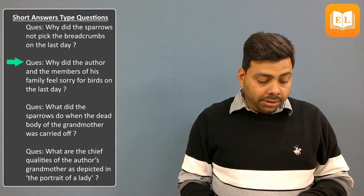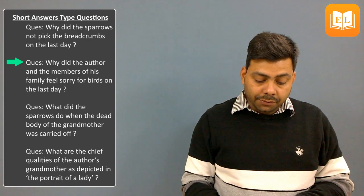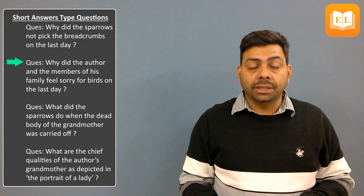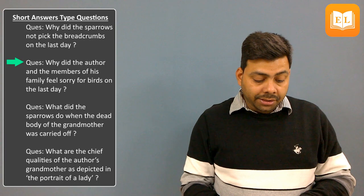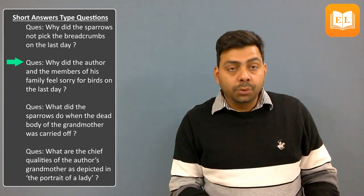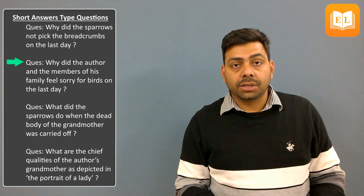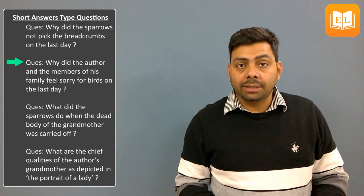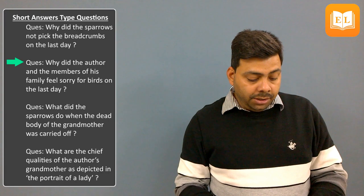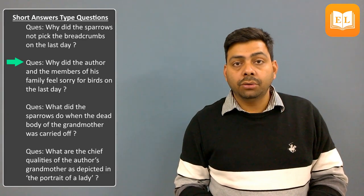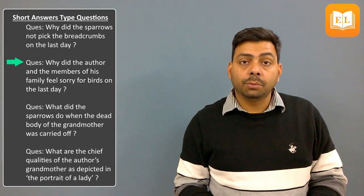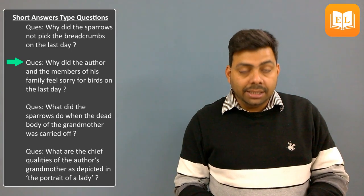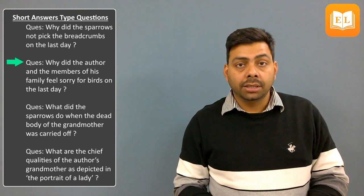Next question: Why did the author and the members of his family feel sorry for birds on the last day? Answer: The birds were dumb with grief over the old lady's death. The author's mother threw some crumbs to them, but the birds did not touch them even. They flew away silently. This made the author and the members of his family sad for the birds.